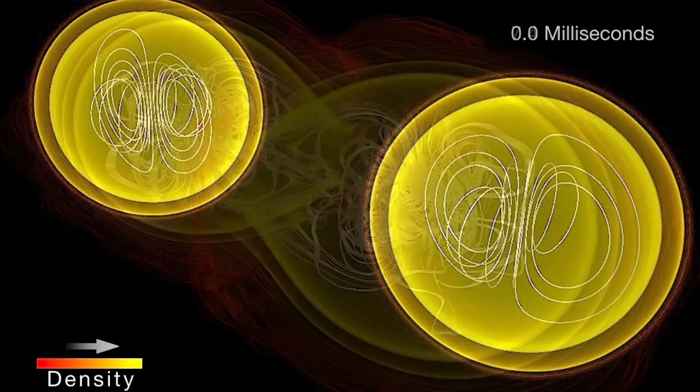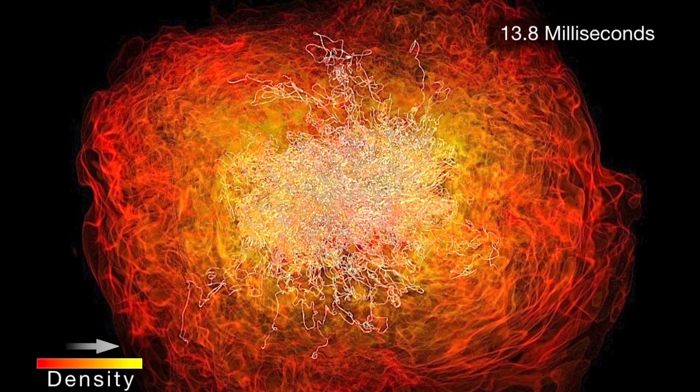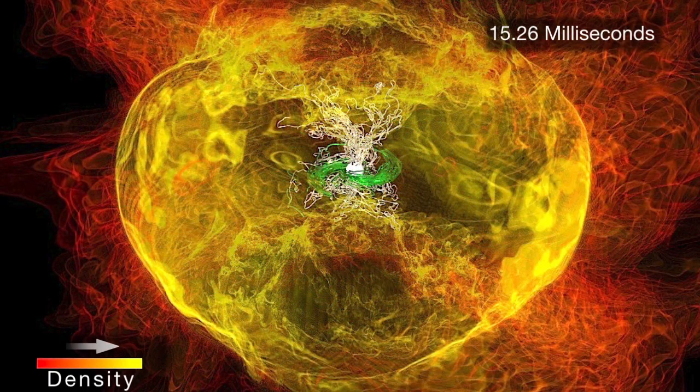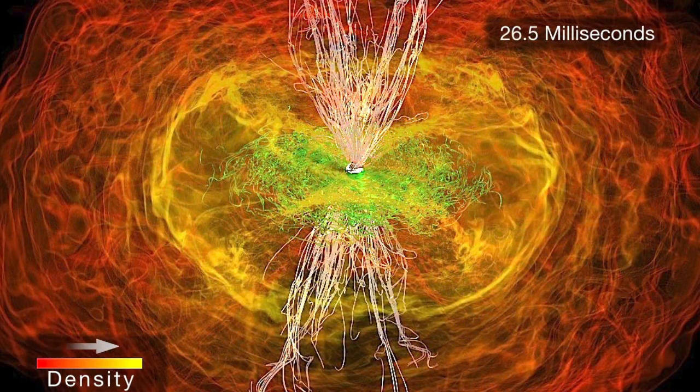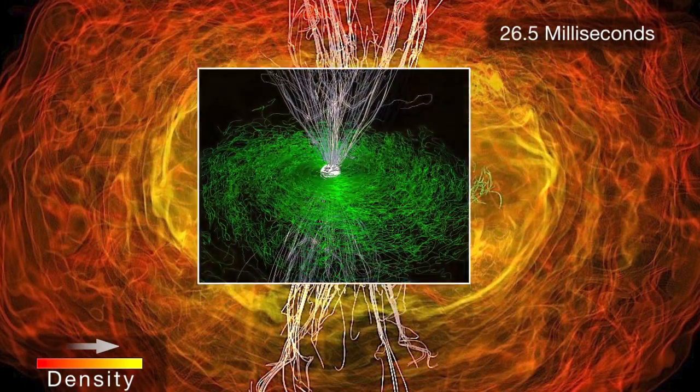The simulation shows the same disorderly behavior of the matter and magnetic fields. Both structures gradually become more organized, but what's important here is the white magnetic field.